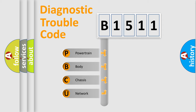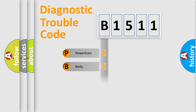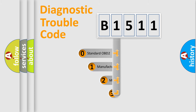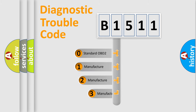We divide the electric system of automobile into four basic units: Powertrain, Body, Chassis, and Network. This distribution is defined in the first character of the code.